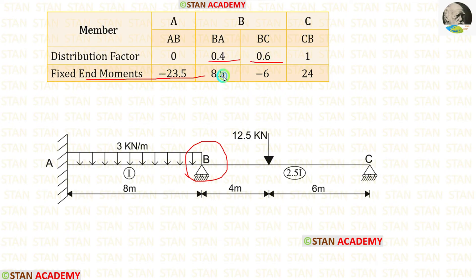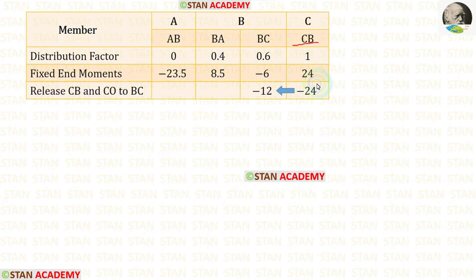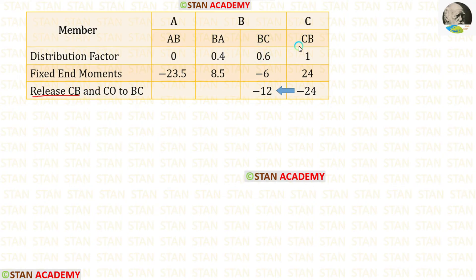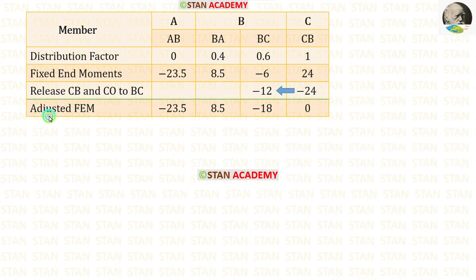Now let us enter the fixed end moments. At point C, MCB must be 0 because it is a simply supported end. Since the fixed end moment for CB is 24, we add −24 to make it 0, and carry over half of −24, which is −12, from CB to BC. The adjusted fixed end moments: AB and BA remain unchanged; for BC, we add −6 and −12 to get −18.